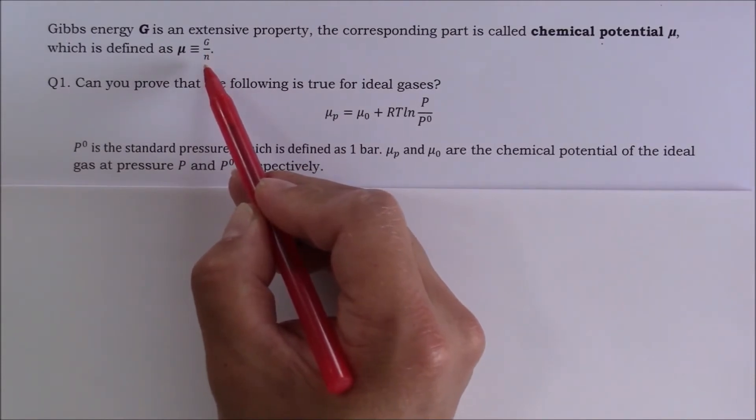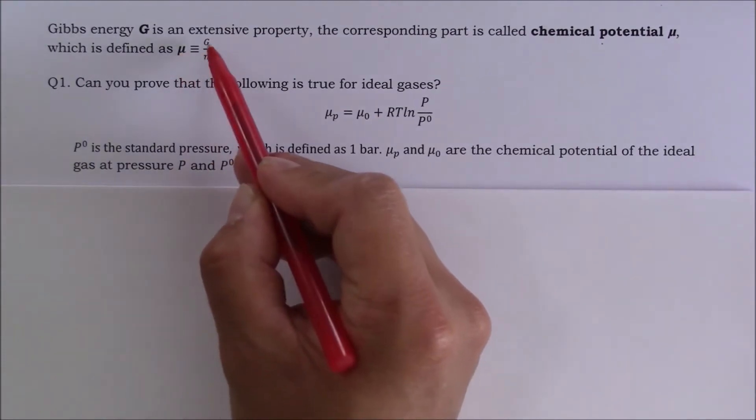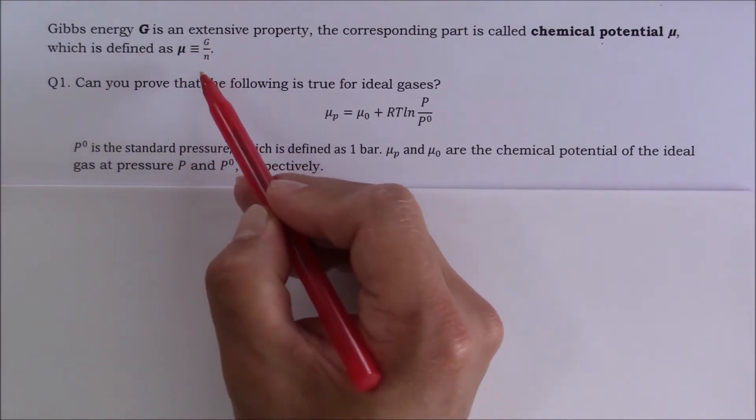This is similar to the relationship between mass and density. Density is the mass per unit volume. Chemical potential is the Gibbs energy per mole of chemicals.